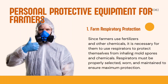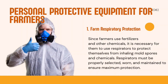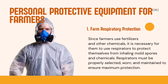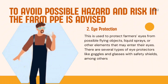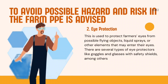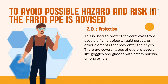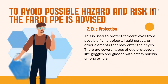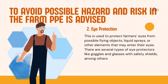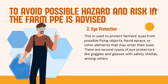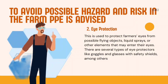Respirators must be properly selected, worn, and maintained to ensure maximum protection. 2. Eye protection. This is used to protect farmers' eyes from possible flying objects, liquid sprays, or other elements that may enter their eyes. There are several types of eye protectors like goggles and glasses with safety shields, among others.